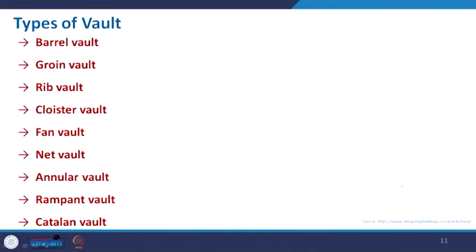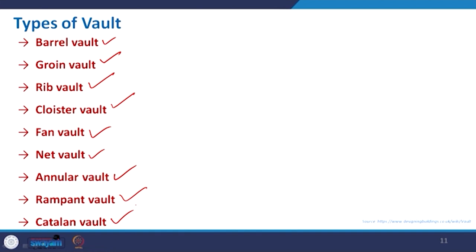Now coming to the types of vaults, there are many classifications depending on shape and other factors. What I have picked up includes: the barrel vault, the groin vault, the rib vault, the cloister vault, the fan vault, the net vault, the annular vault, the rampant vault, and the Catalan vault. We will look at images for each of them.